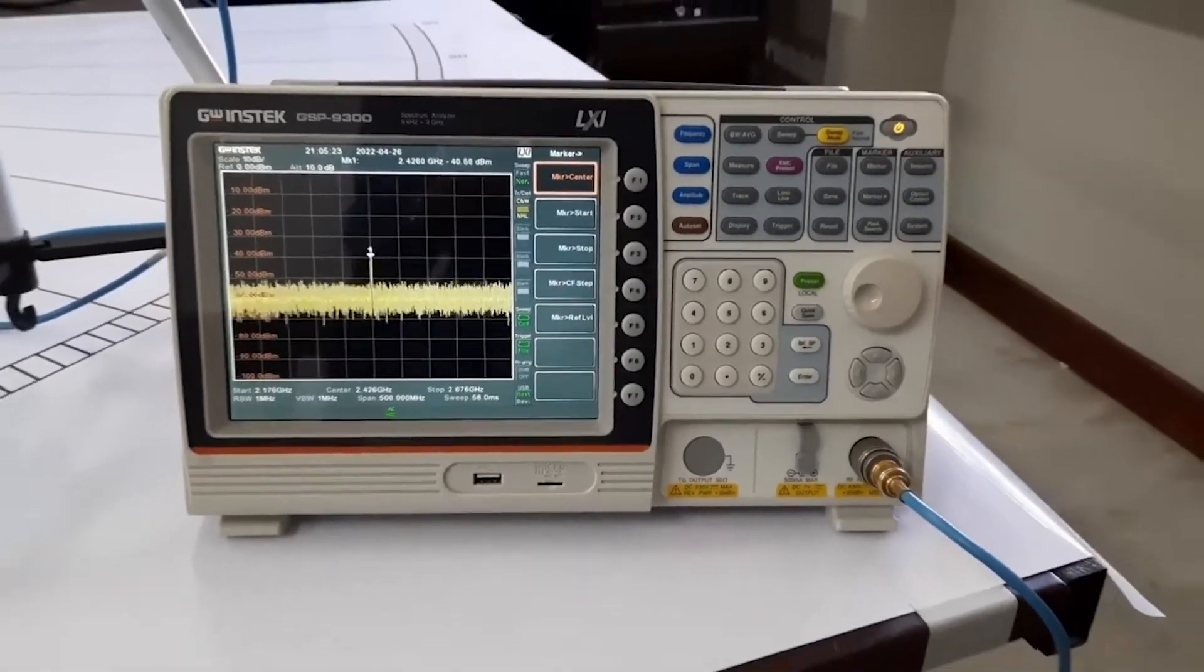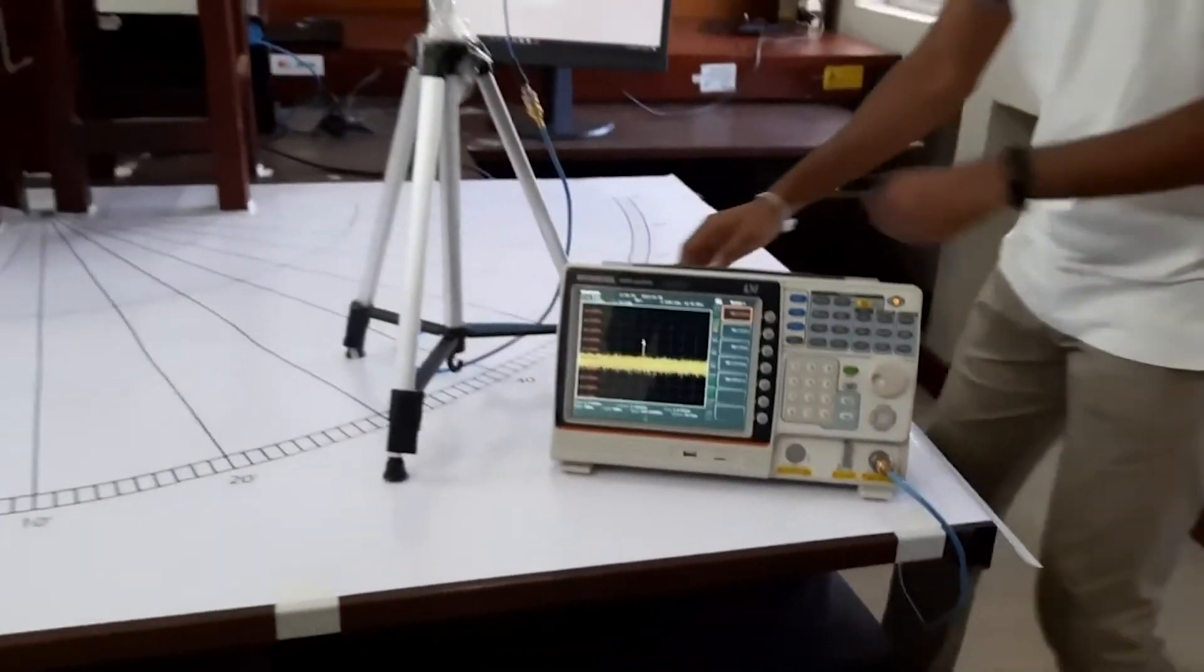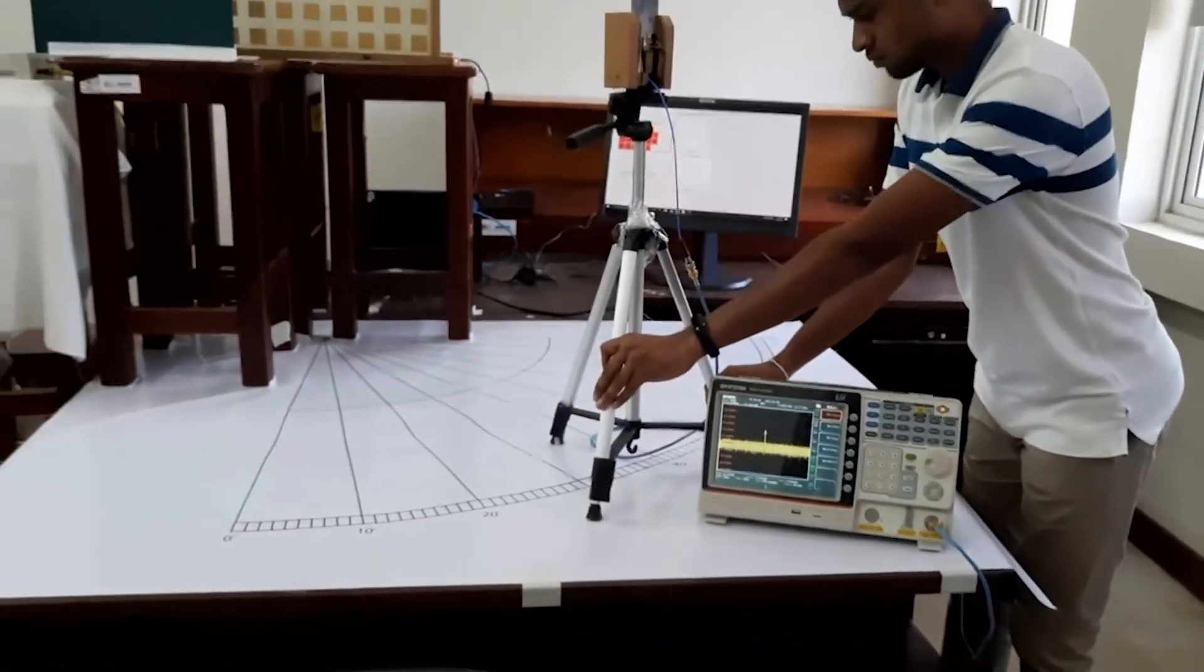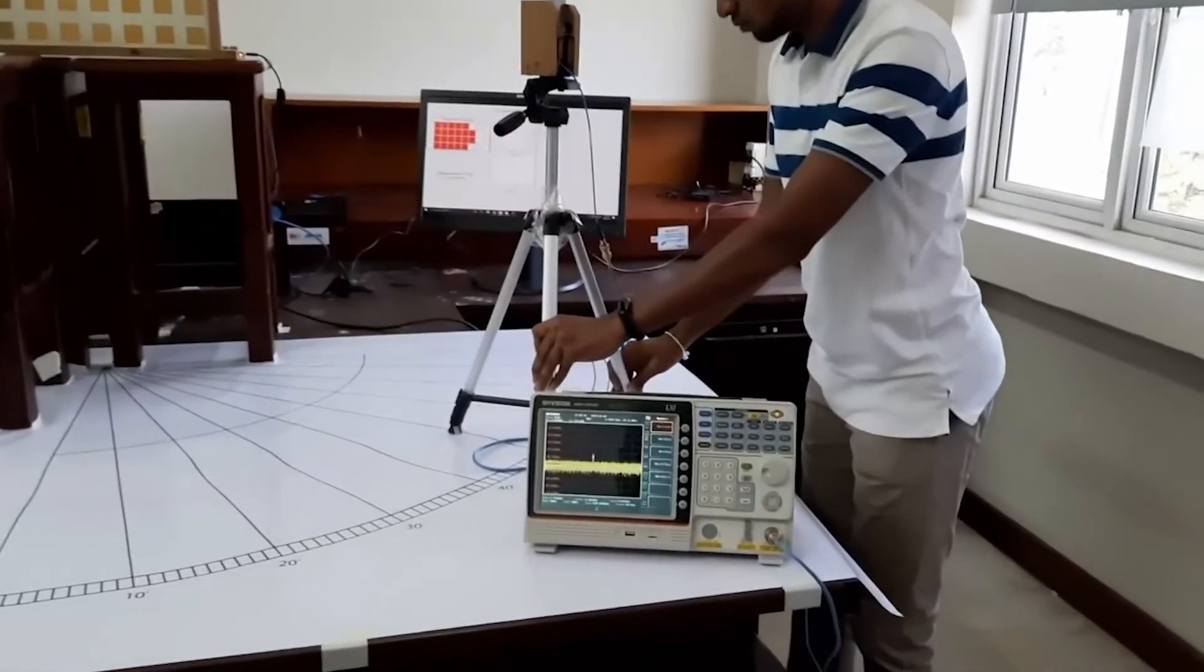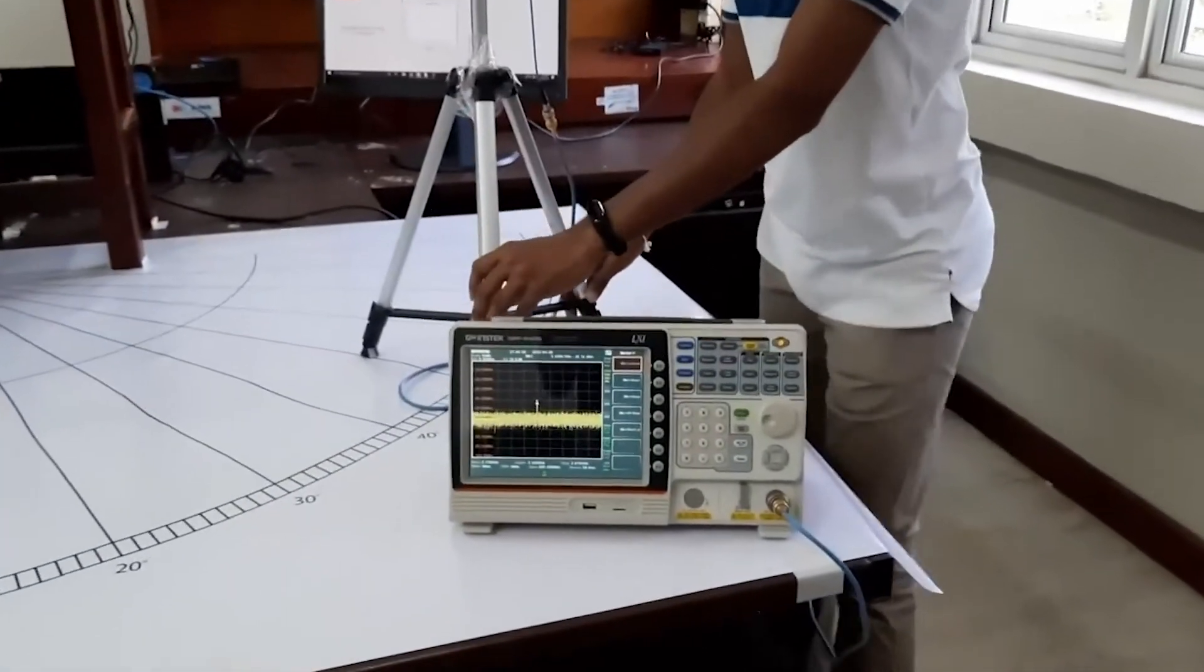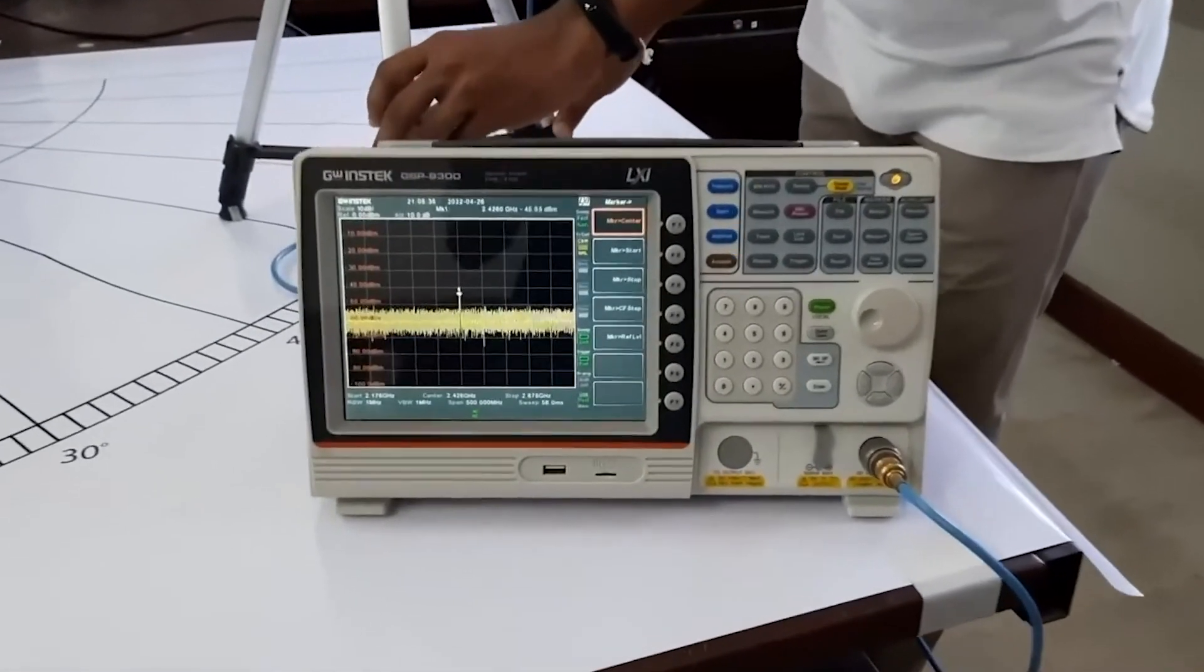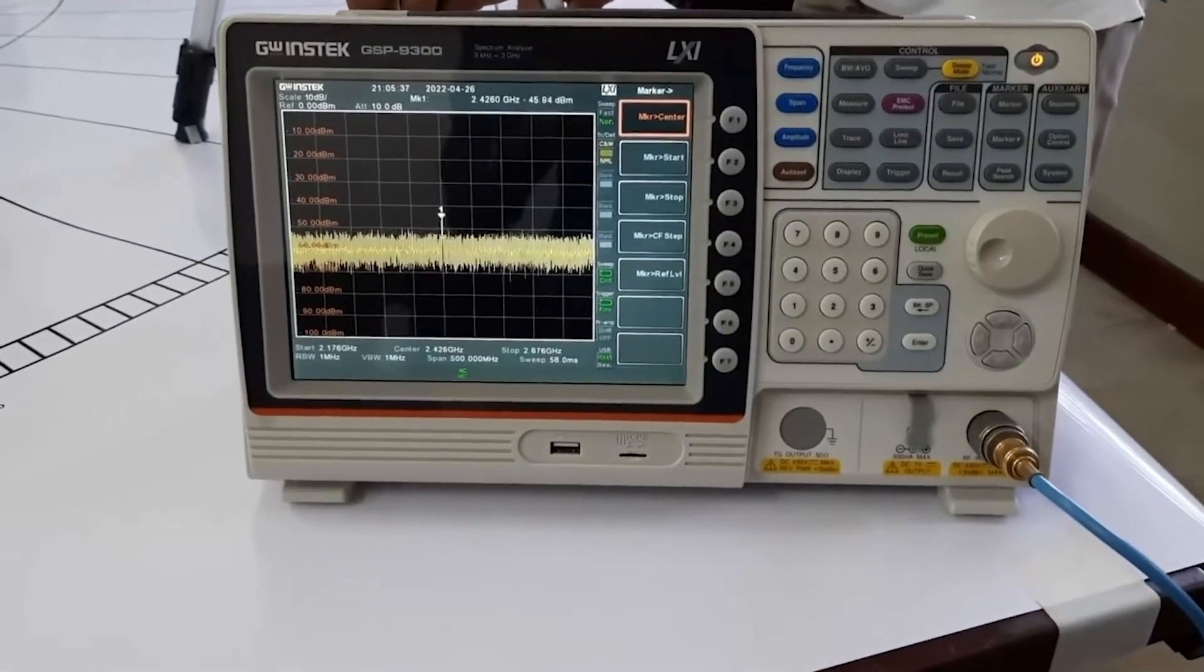And as we gradually take the receiver away from 35 degree direction, you can see the power level gradually gets declined below minus 40 dBm power level.